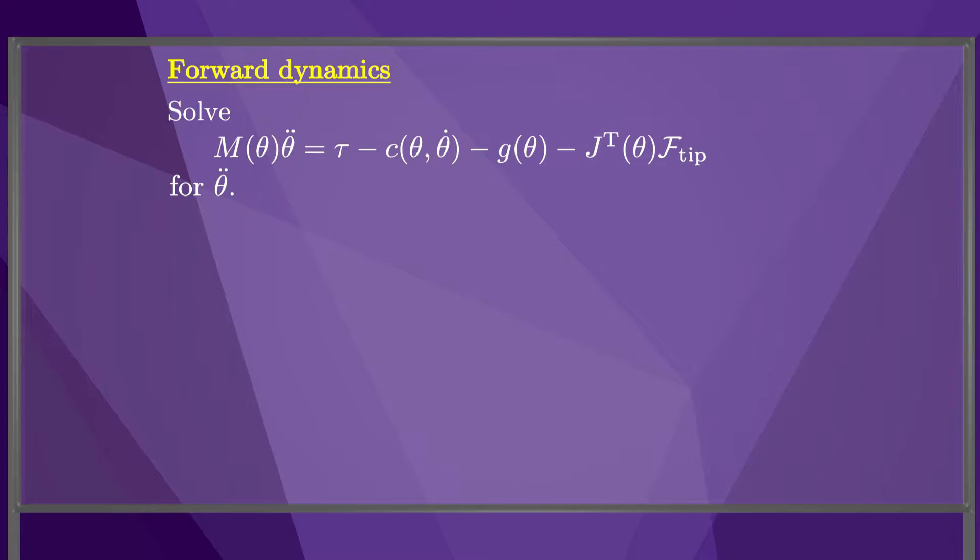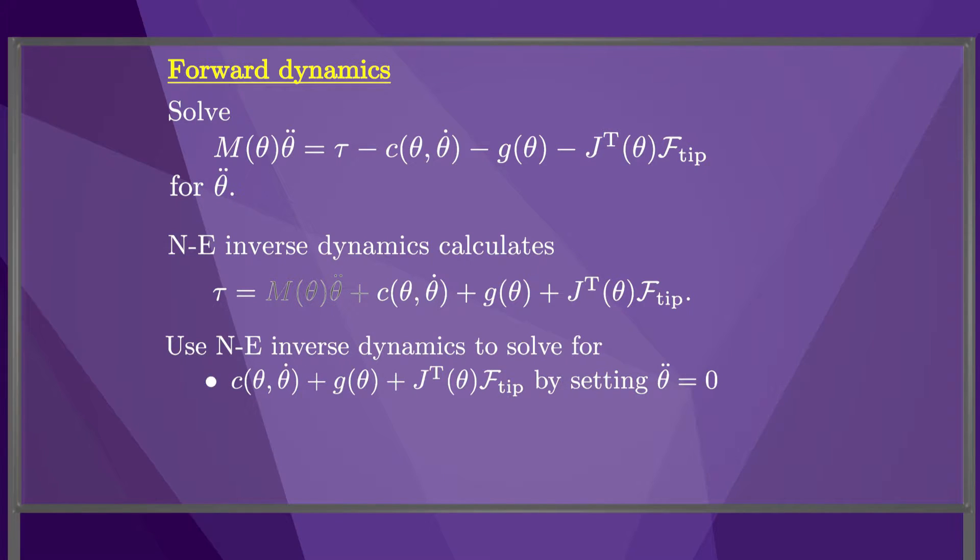We can solve the forward dynamics using the inverse dynamics algorithm. First, we use the inverse dynamics to calculate the joint forces and torques if the joint accelerations theta double dot are zero. This gives us the Coriolis terms, the gravity terms, and the end-effector wrench terms of the joint forces and torques.